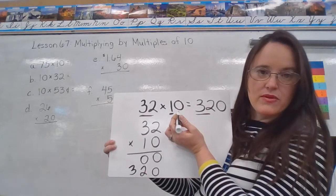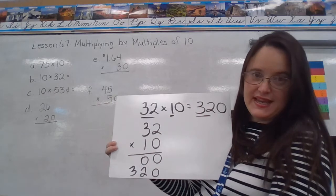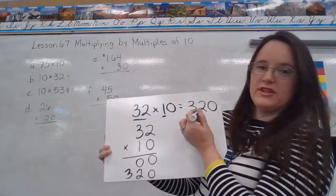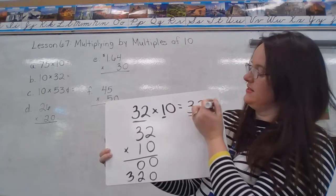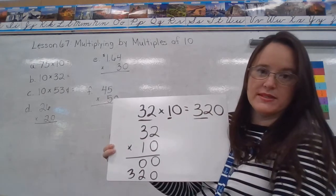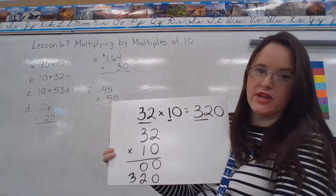But when we have a 0, as in the number 10 here, we've got 32 tens, so we have to put that 0 in the ones place, and we end up with 320.